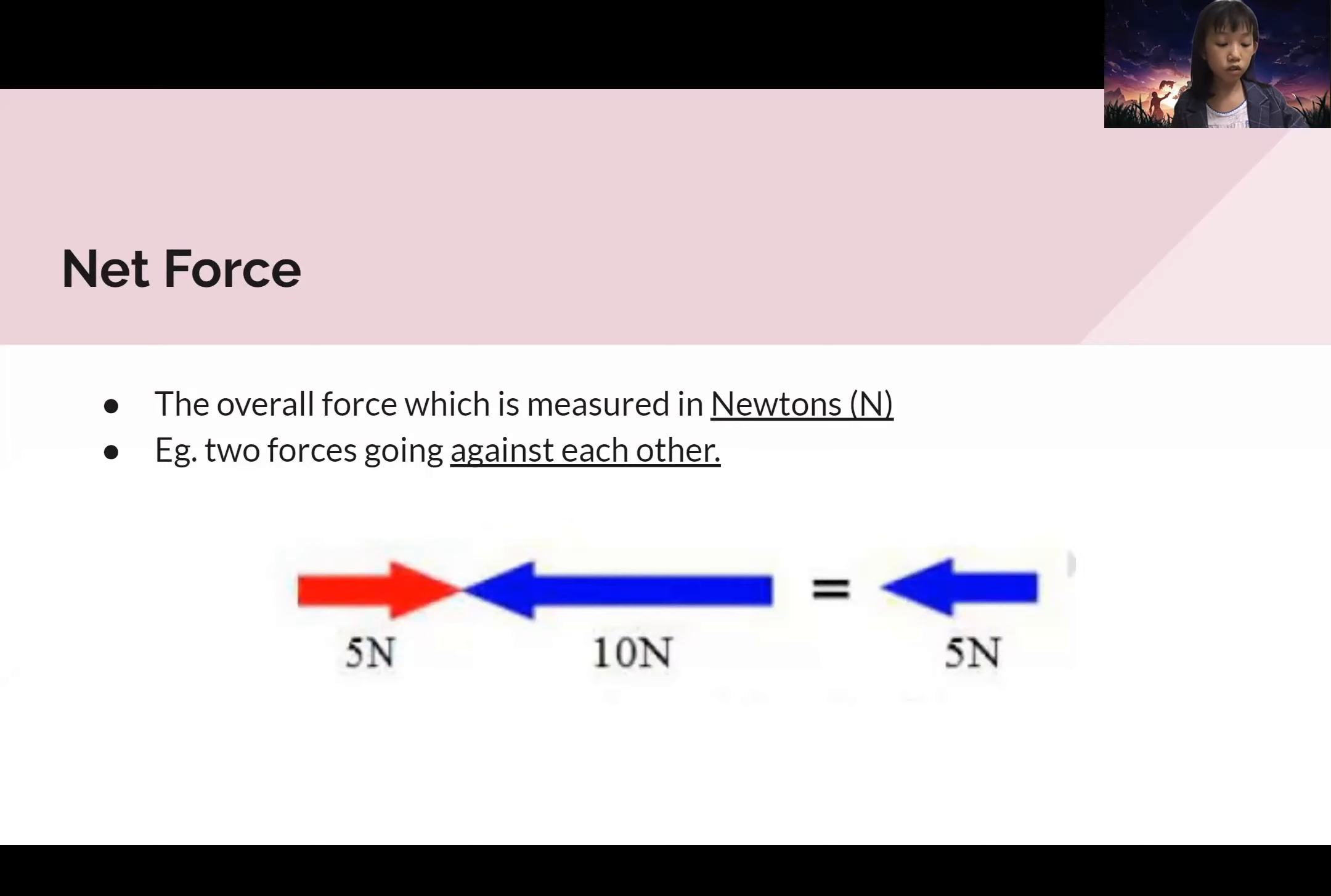Some examples could be two forces going against each other. So have a look at the photo that I've placed inside the slides. As you can see, five newtons versus ten newtons, you will get five - I mean negative five.